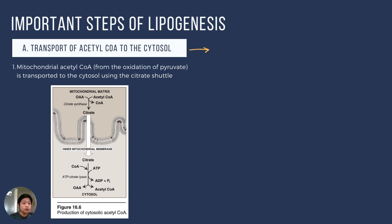Acetyl-coenzyme A is formed in the mitochondrion, but lipogenesis occurs in the cytosol, so there has to be a way to transfer acetyl-CoA from the mitochondrion into the cytosol. Turn your attention to the image below — you have a sample section of the mitochondrion. At the top of the image is the mitochondrial matrix where acetyl-coenzyme A is found. In the mitochondrial matrix, acetyl-coenzyme A undergoes synthesis of citrate by fusing with oxaloacetate through the Krebs cycle. Through citrate synthase, we synthesize citrate from acetyl-coenzyme A. Citrate then passes into the cytosol through a citrate transporter.